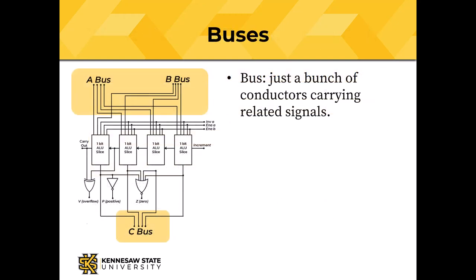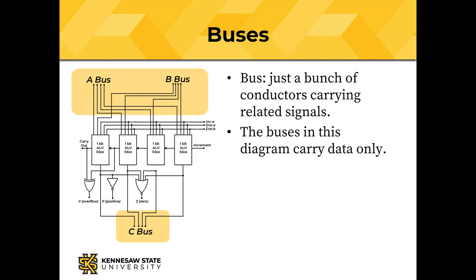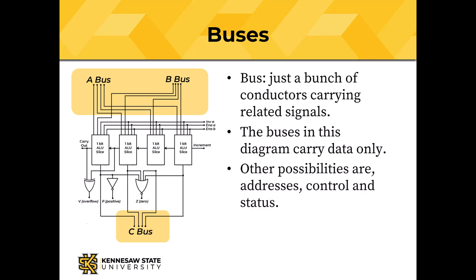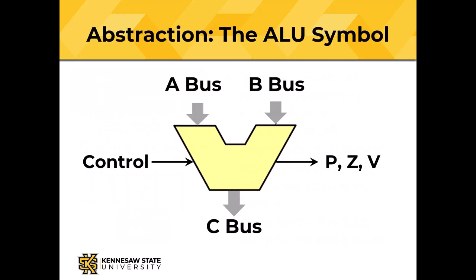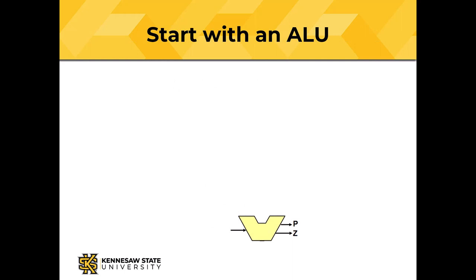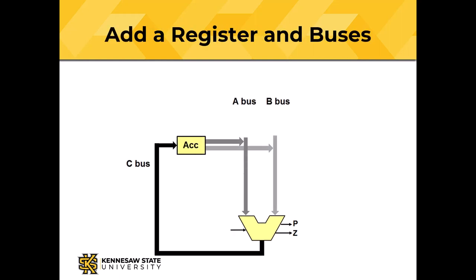A bus, in computer terminology, is just a bunch of conductors carrying related signals. The buses in this diagram of our computer are carrying data only. Other possibilities include addresses, control, and status signals. Some buses, like USB, carry power and ground. Once we understand how our ALU is designed, we can abstract away the design details — remember those fat arrows represent multi-bit paths. So let's build a CPU. We start with an arithmetic logic unit like the one we just designed, add a register — the accumulator labeled ACC — and some buses.